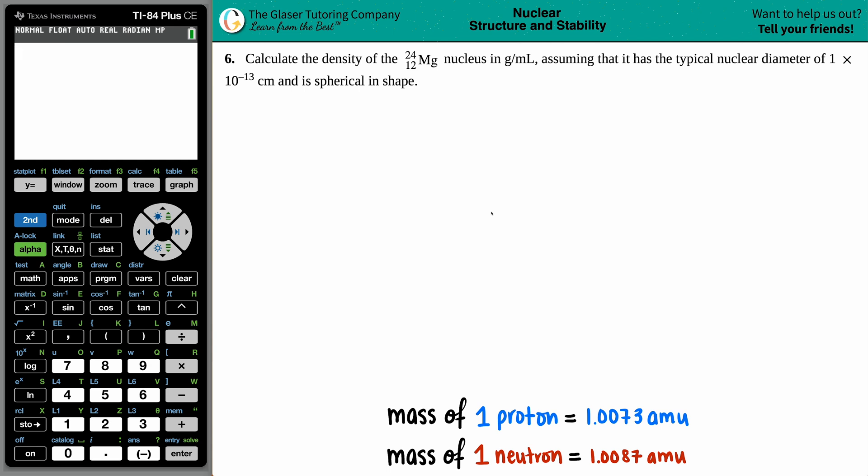Number six, calculate the density of a 24-12 magnesium nucleus. They want that density in grams per milliliters, assuming that it has a typical nuclear diameter of 1 times 10 to the negative 13th centimeters and is spherical in shape. Ultimately, the question is asking for the density of that magnesium nucleus.